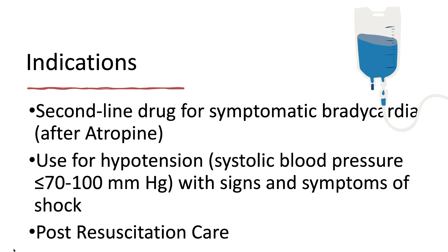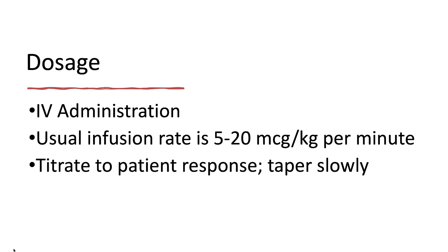Dopamine is a second-line drug for symptomatic bradycardia after atropine, or where transcutaneous pacing is ineffective. It can be used for hypotension and the management of shock unresponsive to fluid administration, as part of post cardiac arrest care. The AHA recommended infusion rate is 5 to 20 mcg per kg per minute. It is always important to titrate the dose against the desired effect and ensure to taper slowly.